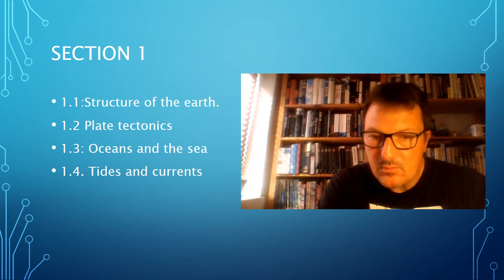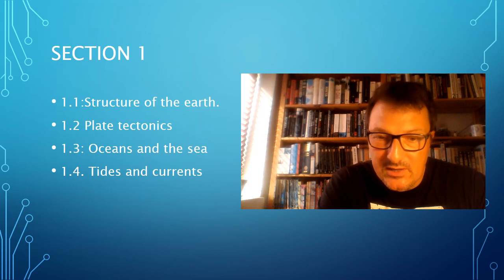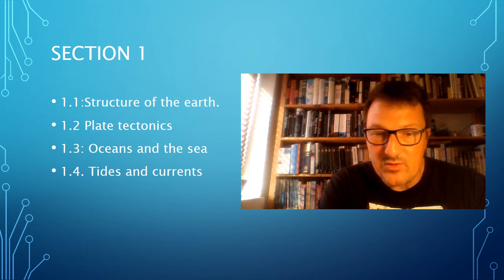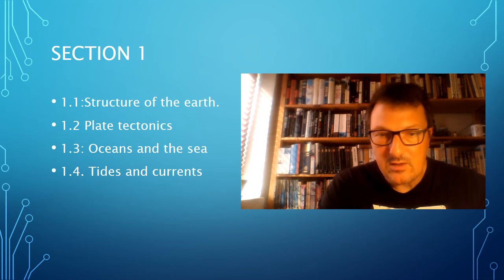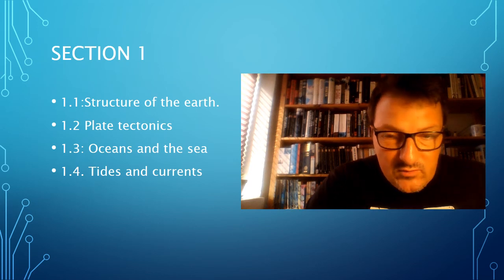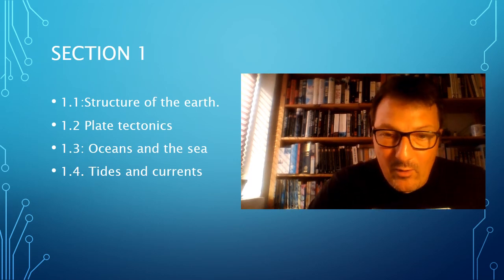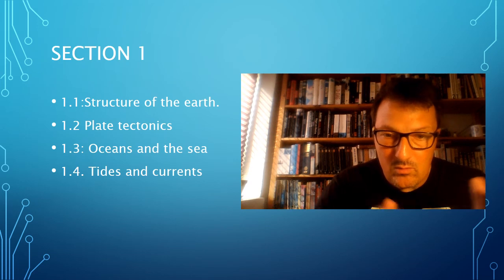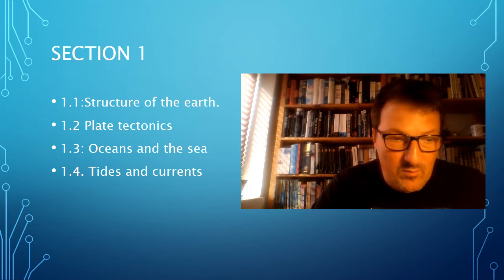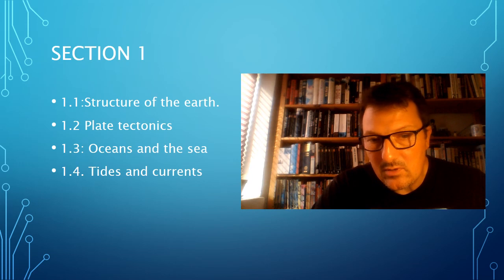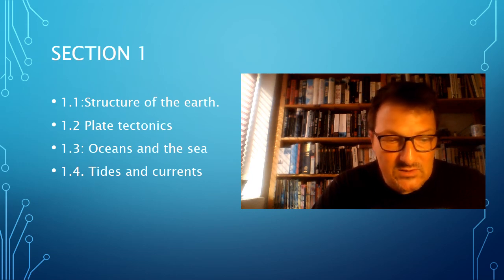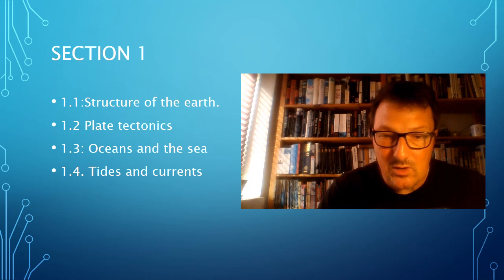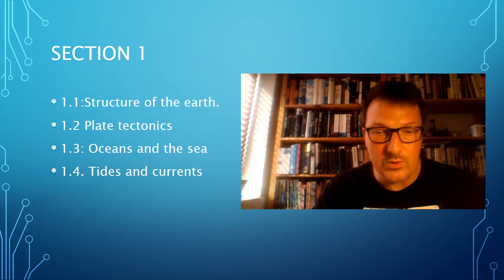Section 1.2 will then expand on plate tectonics — the fact that the Earth is moving and we have plates moving towards each other (convergent), moving away from each other (divergent), and transform boundaries. We'll look at how the Earth is changing and how this has led to formation of the ocean, how different boundaries can give earthquakes and volcanoes, and look at tsunamis. So a lot of standard geography stuff in 1.2.